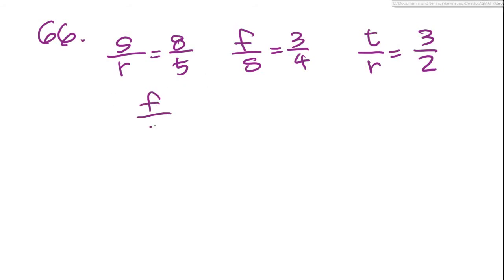Number 66 says at a certain school, the ratio of the number of second graders to the number of fourth graders is 8 to 5. The ratio of first graders to second graders is 3 to 4, and the ratio of third graders to fourth graders is 3 to 2. We want to know the ratio of first graders to third graders.